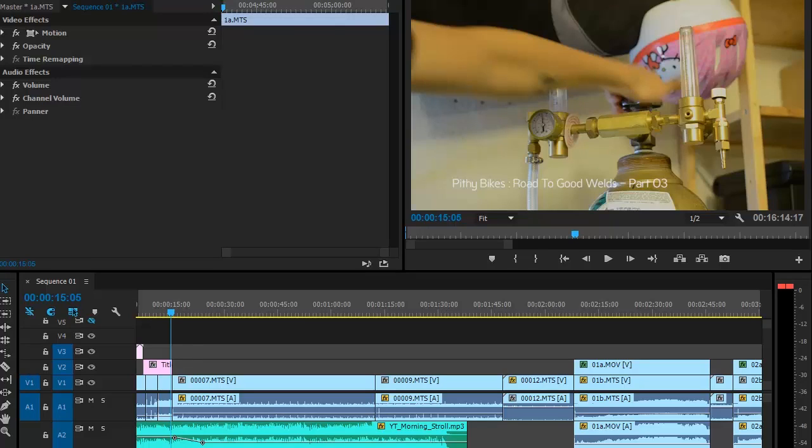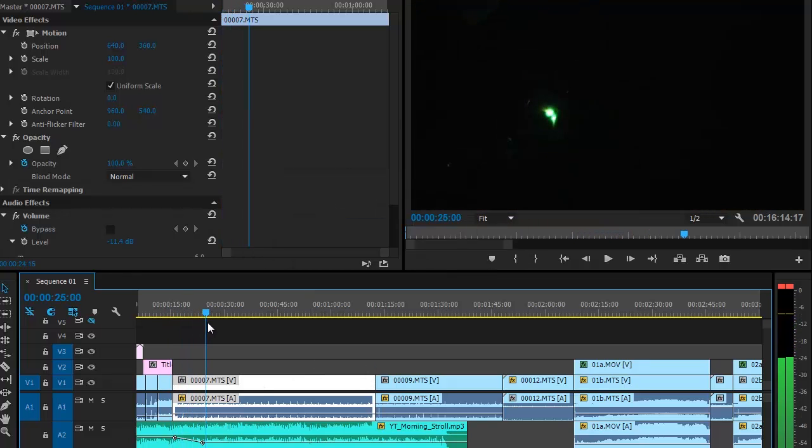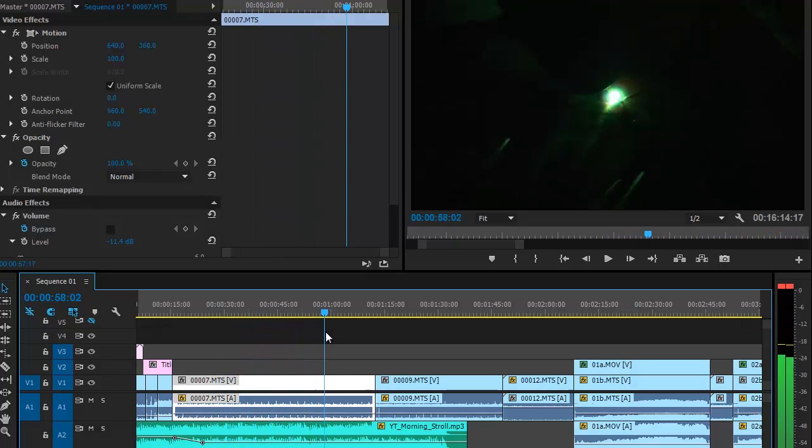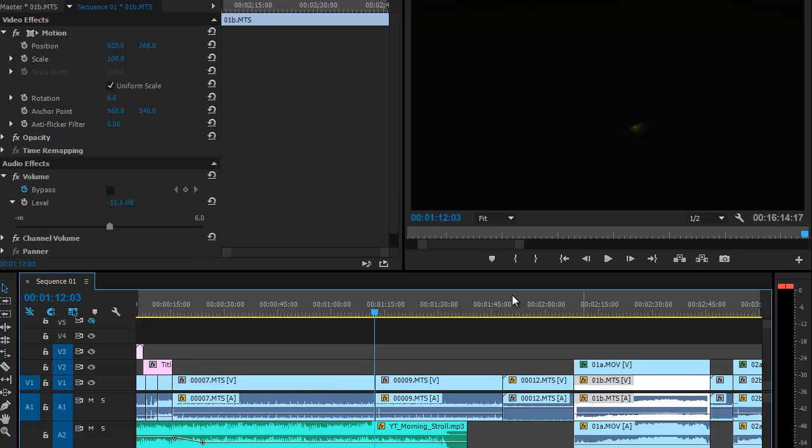This is Adobe Premiere, the software I use to edit my videos. The reason I'm showing you this is I noticed something interesting while editing. You can see I just highlighted that clip. That first clip is the pulse dip method and it is about a minute long, which means I am pulse dipping for about one whole minute.